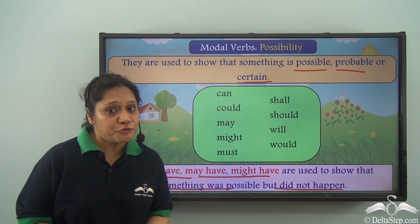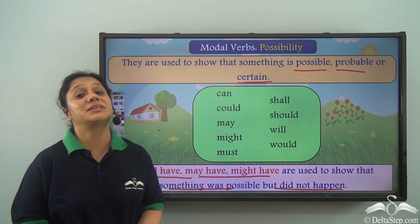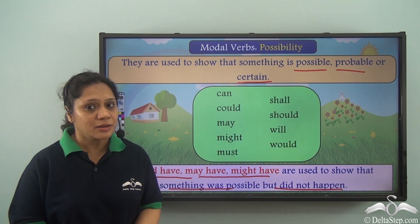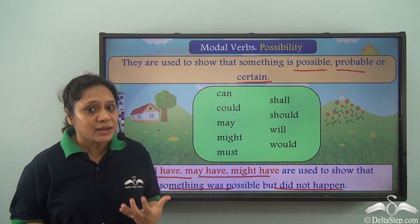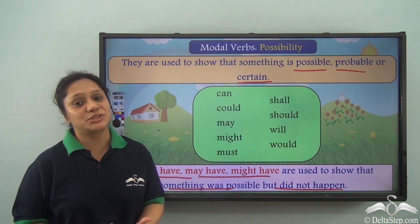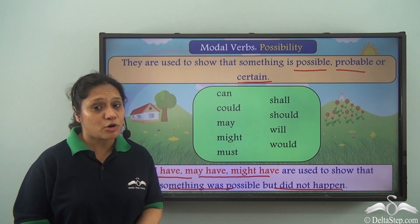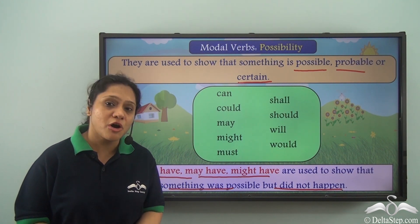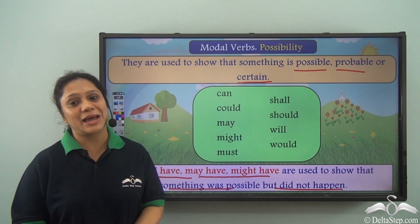If you find modal verbs of possibility confusing, try to read as many examples as you can find from different books, and they will not be confusing anymore.